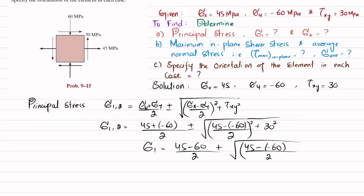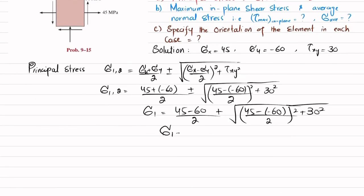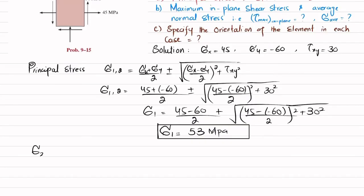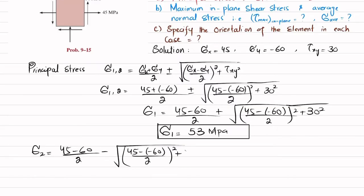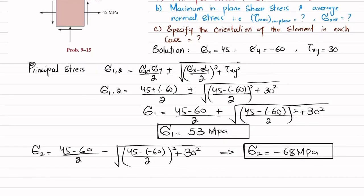Calculating, sigma 1 comes out to be 53 MPa. For sigma 2: (45 − 60)/2 minus √[((45 − (−60))/2)² + 30²], which gives sigma 2 equal to minus 68 MPa. So these are the principal stresses for part one.